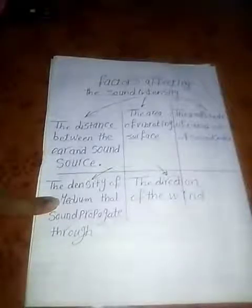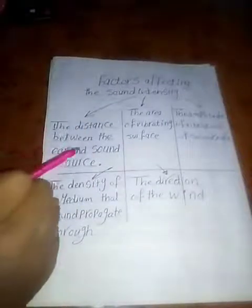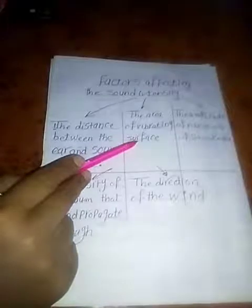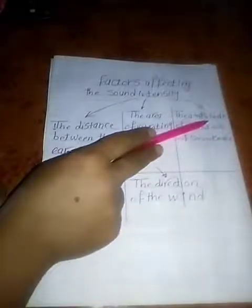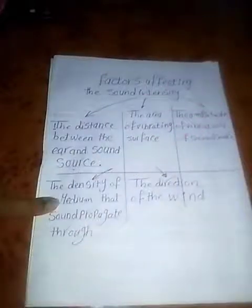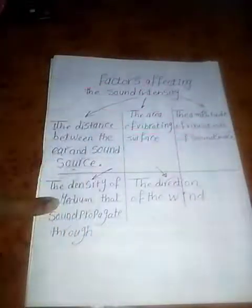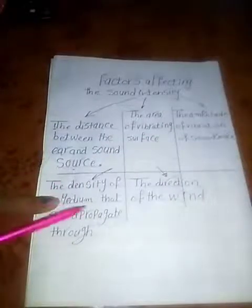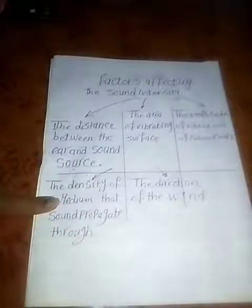Now we have factors that affect sound intensity. Number one: the distance between the ear and sound source. Number two: the area of the vibrating surface. Number three: the amplitude — the maximum displacement of the vibrating sound source. Number four: the density of the medium that the sound propagates through. And the last one: the direction of the wind.